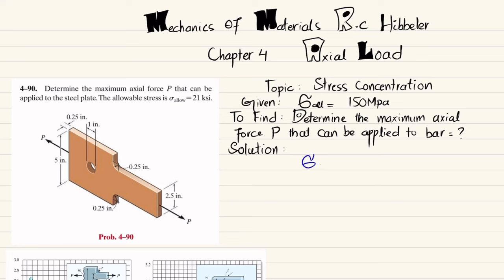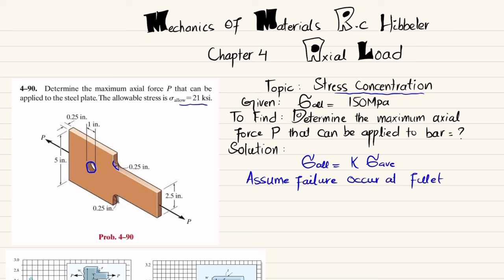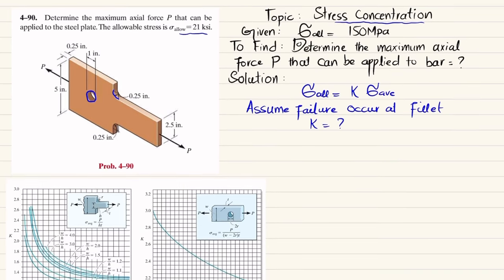We need to find the maximum load P that can be applied on this steel plate. We know that the allowable stress equals K times sigma average, where K is the stress concentration factor. You can see there is a fillet as well as a hole, so we will first assume failure occurs at the fillet.